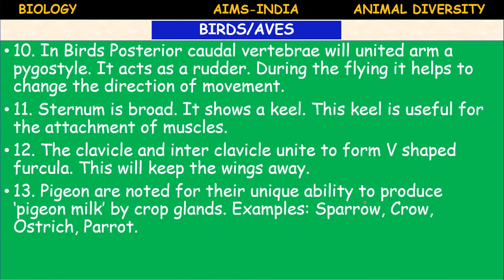Pigeons are noted for their unique ability to produce a special secretion called pigeon milk by crop glands. Examples of birds: sparrow, crow, ostrich, parrot, eagle, vulture, penguin, kiwi, ostrich, emu — these last four are examples of flightless birds. Ducks, fowls (hens), and turkeys can fly short distances.